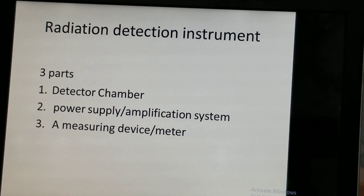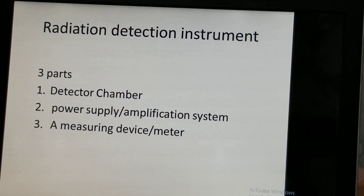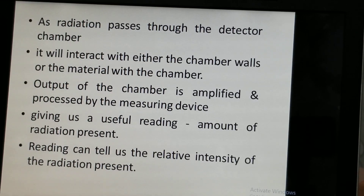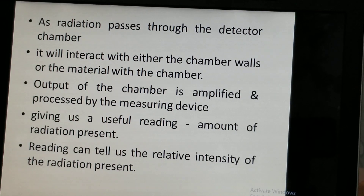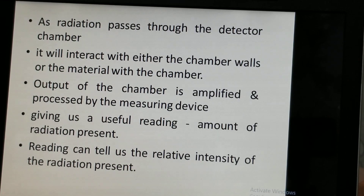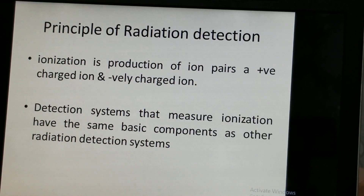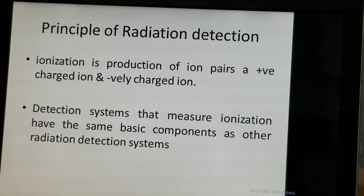A radiation detection instrument has three parts: a detector chamber, a power supply, an amplification system, and a measuring device called an ammeter. When radiation passes through the detector chamber, it interacts with either the chamber walls or the material within the chamber. The output of the chamber is amplified and then processed by a measuring device that gives a useful reading of how much radiation is present in that area.